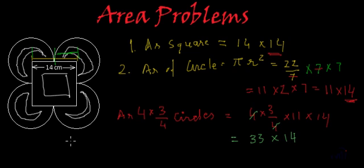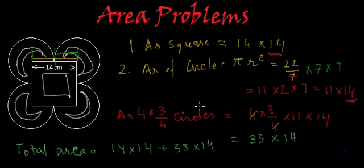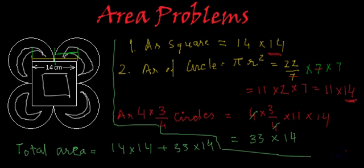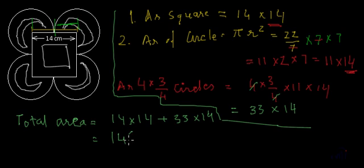And now if we talk about the total area of the figure, total area of the figure will be area of the square which is 14 multiplied by 14, and area of the 4, 3/4th circles which is 33 multiplied by 14. And now I am going to solve it further. 14 we will take common and inside we will have 14 plus 33. So 14 plus 33 is 47.